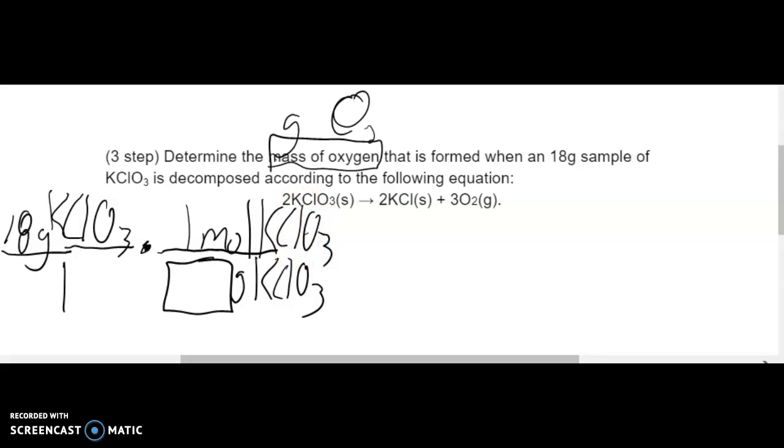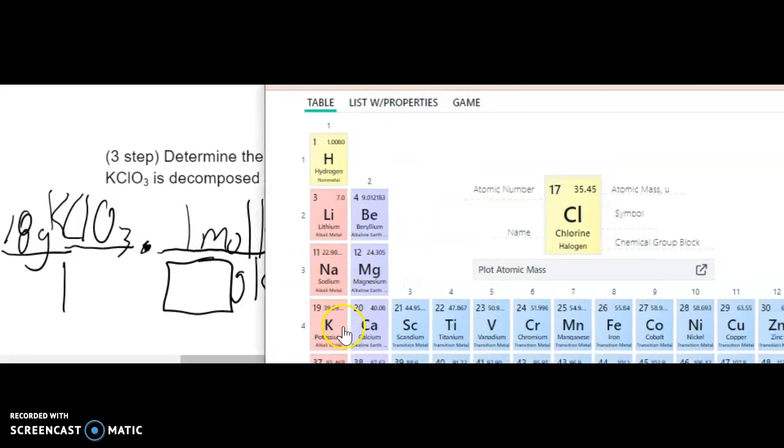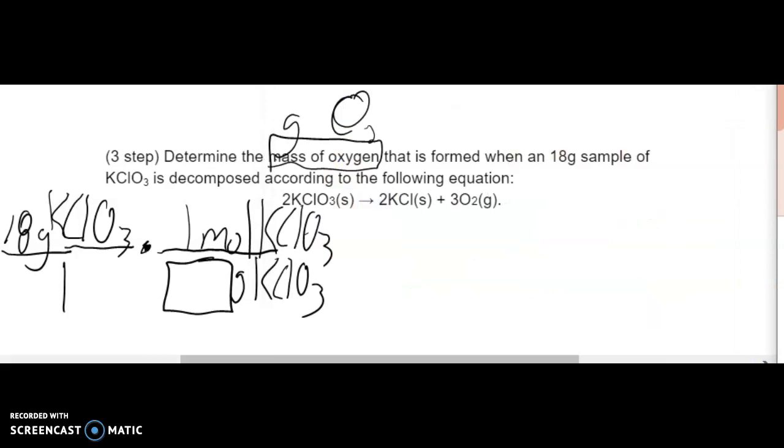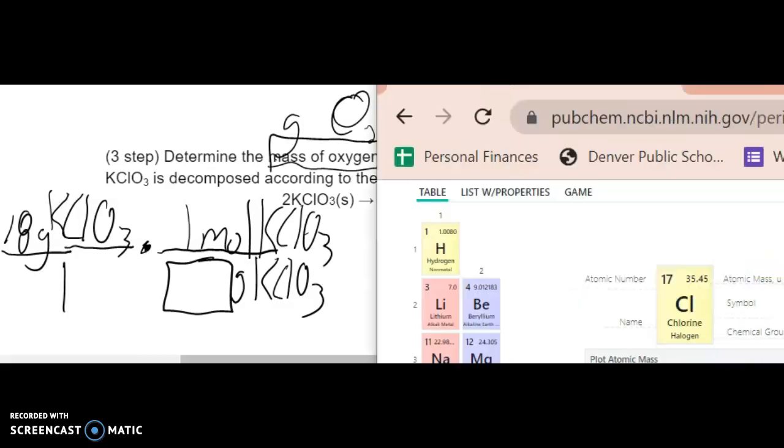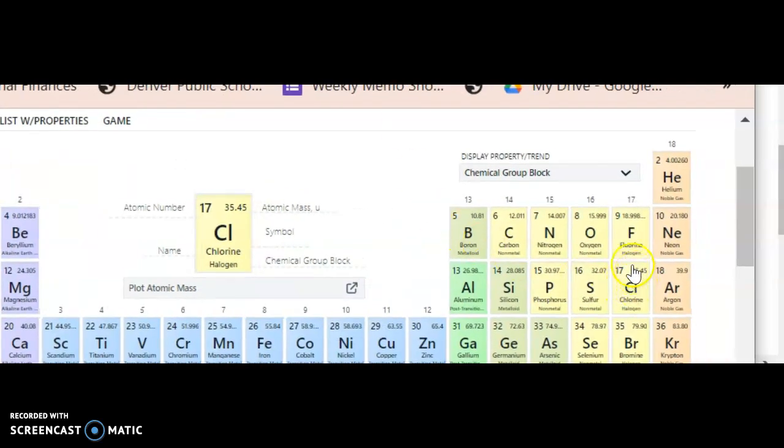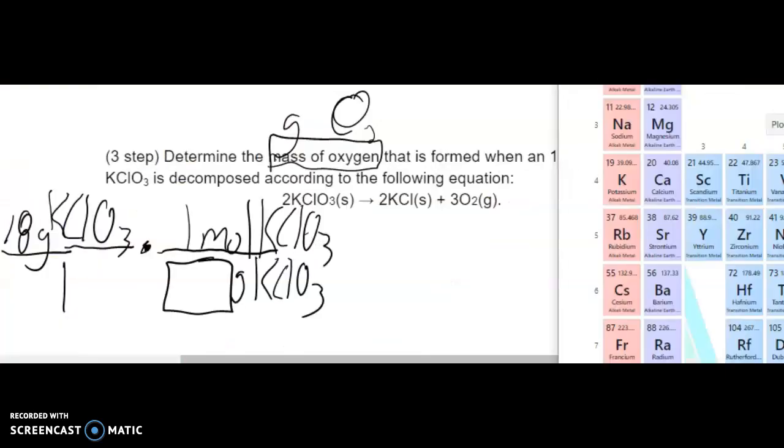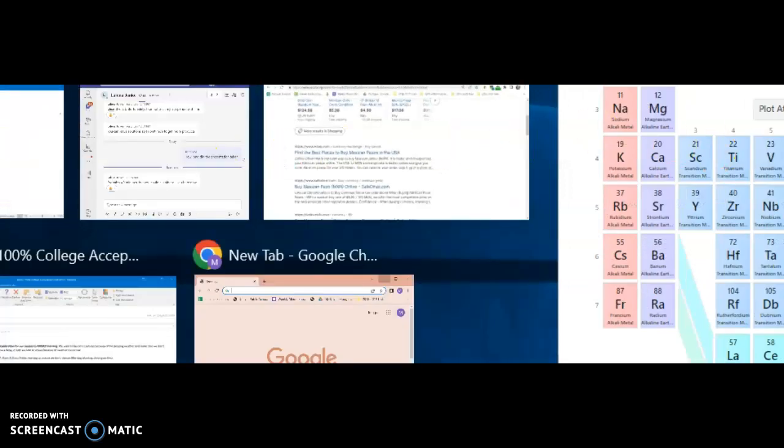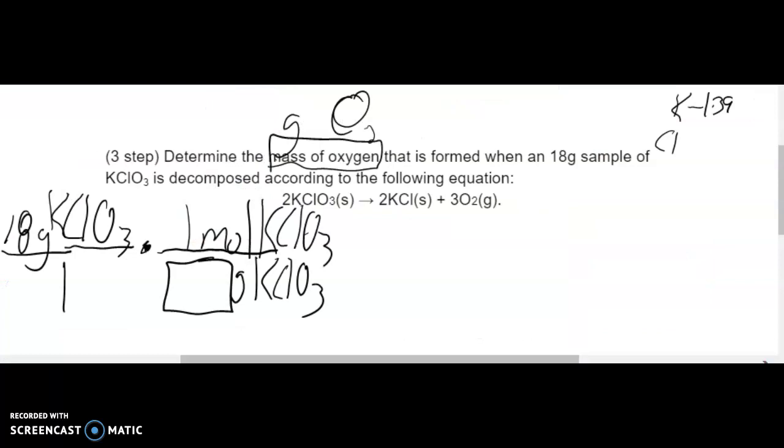Well, for that, I'm going to need my periodic table. So looking at K, it is 39.09. I'm going to round that to 39 for the sake of time. So K, I've got one of them, times 39.00. Cl, looking at my periodic table, I've got 35.45, and I've got one of them.